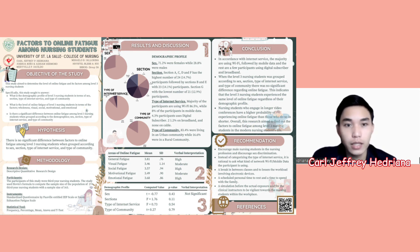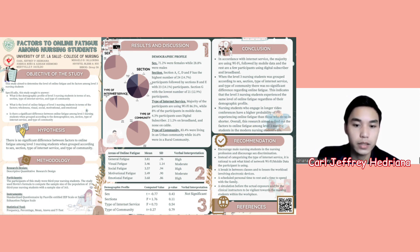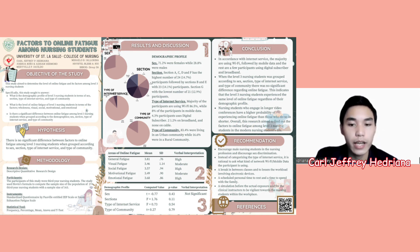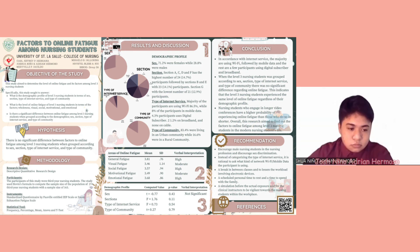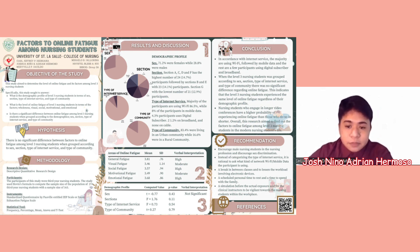Results and discussion. Under the demographic profile, for sex, 7 out of 10 students are females. In section, sections A, B, C, D, E, and F have similar percentages while G has the lowest, yet it still shows equal representation of all sections. For the type of internet service, 86.5% or the majority of the participants are using Wi-Fi, while 8% are using mobile data, 4.3% use digital subscriber, and 21.2% are on broadband with none on cable.